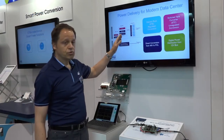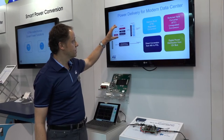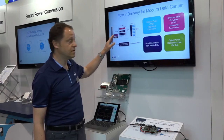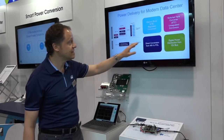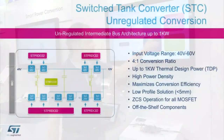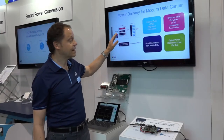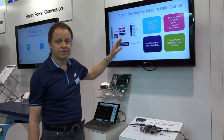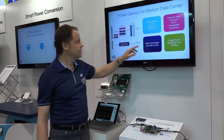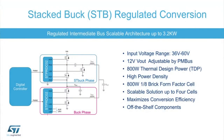For the two-stage approach we have different architectures. We have unregulated architectures based on the STC switch-tank converter, which implements a fixed conversion ratio — most popular is 4-to-1, going from 48 to 12 volts. We also have the regulated intermediate bus implemented by the newly developed STBAC, providing 800 watts in a 1.8 brick form factor, scalable up to 3.2 kilowatts with very good efficiency.